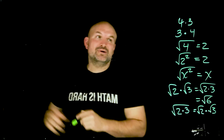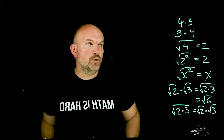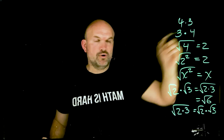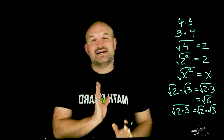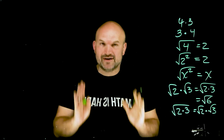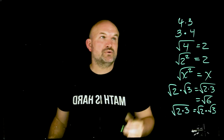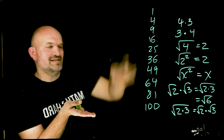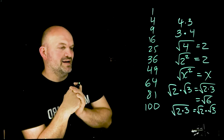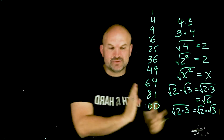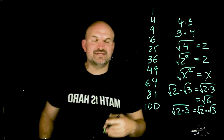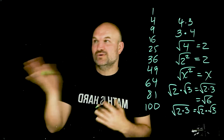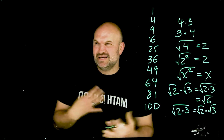Before we get into our examples, I want you to understand what all of our perfect square numbers are. Square numbers are numbers that you can take the square root of evenly — like the square root of 4 equals 2. Since we're starting off fairly simple, I'm going to keep everything up to 100, though students in algebra 2, pre-calculus, and calculus should know square numbers higher than 100.